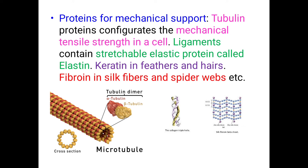Proteins also help maintain mechanical support. Every cell gains structural stability by microscopic units called cytoskeleton, which is chemically made up of tubulin proteins. Similarly, ligaments that join bone to bone contain elastin protein. Keratin proteins are found in feathers and hair, and the tough protein fibroin is present in silk fibers and spider web fibers.